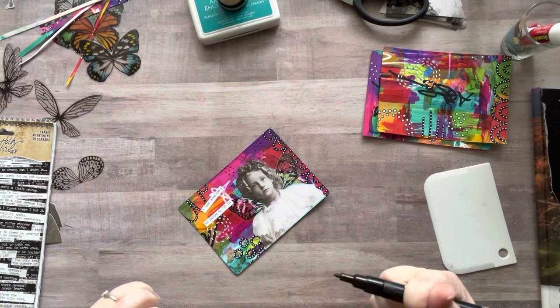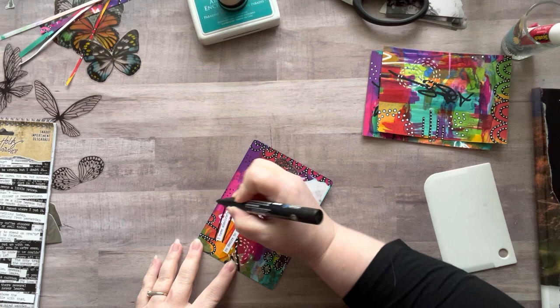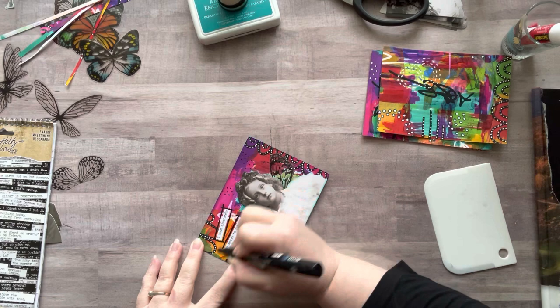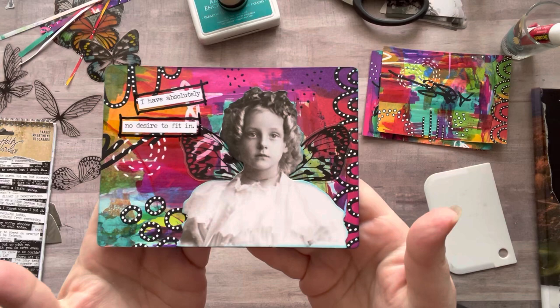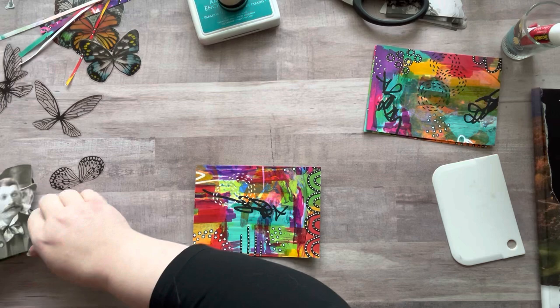I'm using a Posca pen now, and this is what I'm using to go around all the words, just to kind of ground them so they don't look like they're just floating there in midair. I feel like it looks a lot better. Look how cute she is. Oh my gosh, love it.